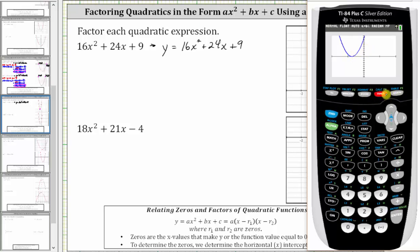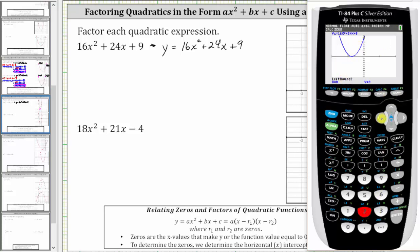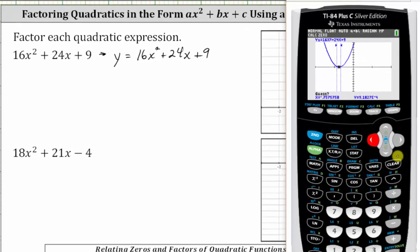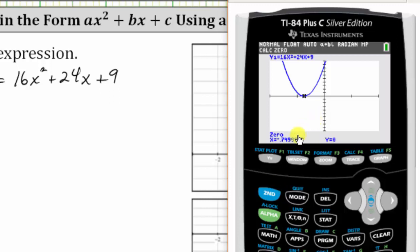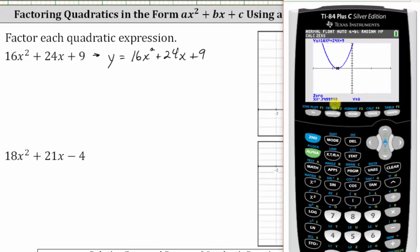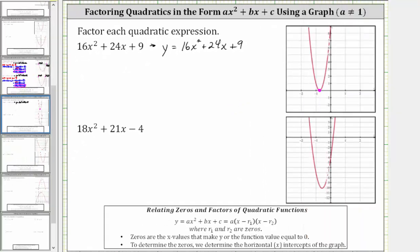We press second trace for the calculation menu, option two for zero. It's asking for the left bound — we need to move the cursor to the left side of the horizontal intercept. Press enter. Right bound, we move to the right side, press enter, and when it says guess, we can move the cursor closer to the horizontal intercept or just press enter. Notice how the calculator gives us x equals negative 0.7499998. We need to recognize this as negative 0.75, which as a fraction is negative 3 fourths. So let's label this ordered pair negative 3 fourths comma zero.